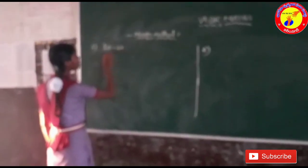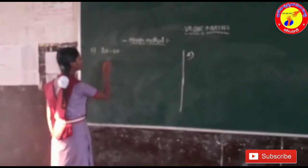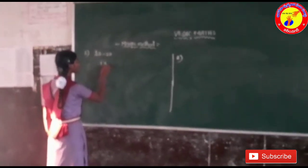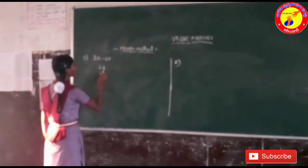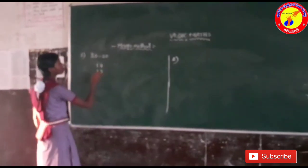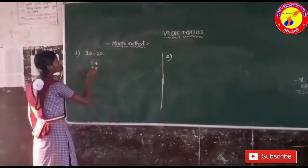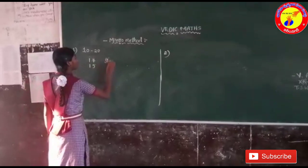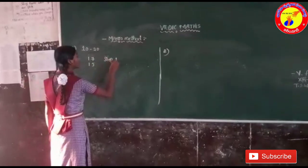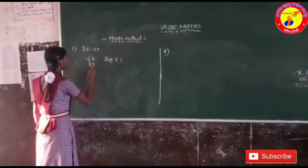First of all, I will take numbers from 10 to 20. I will take 17 and 15 from the 10 to 20 digits. So in step 1, we have to draw a mango like this.